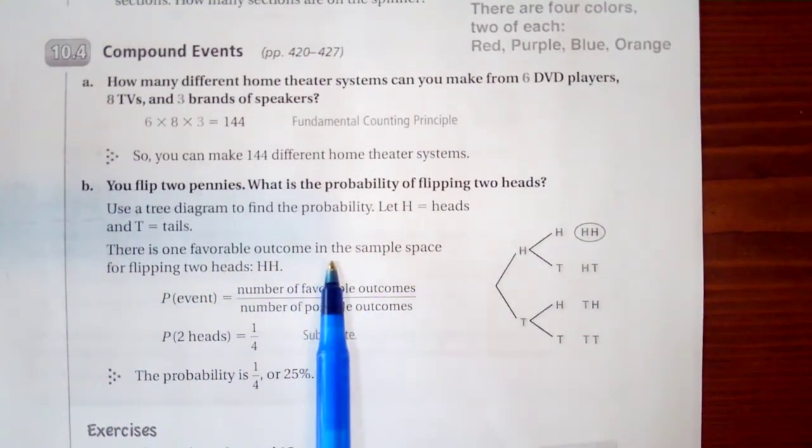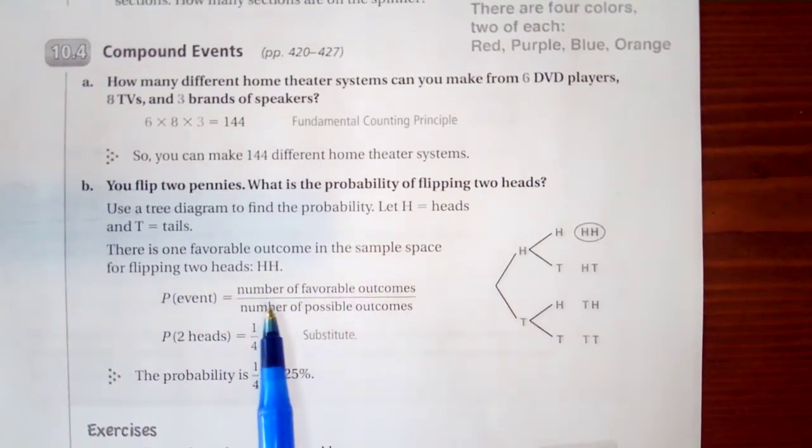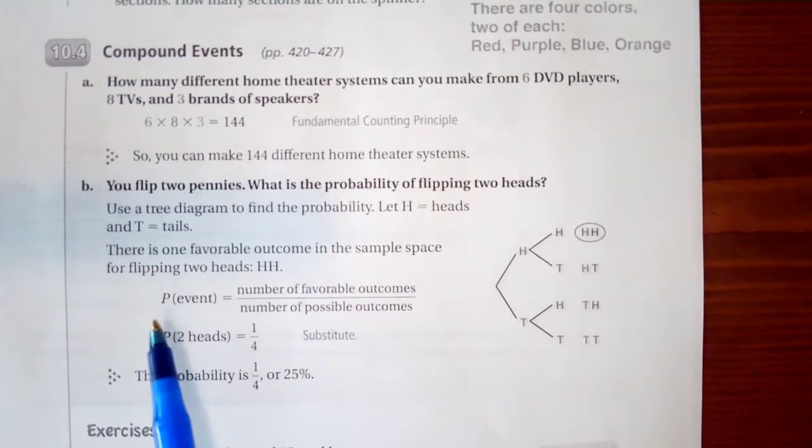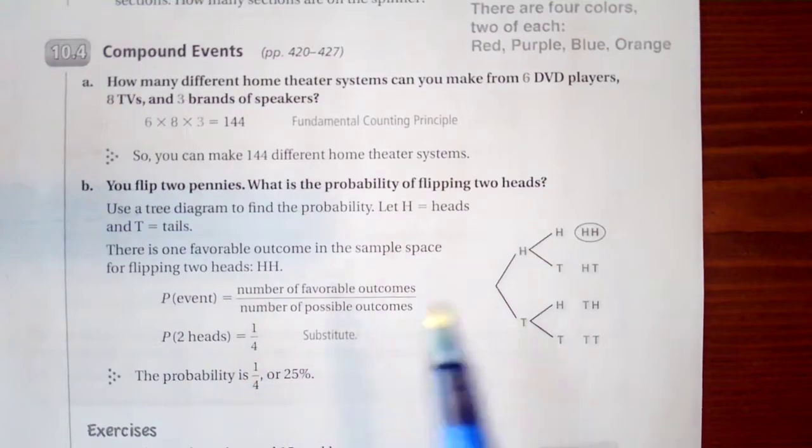There is 1 favorable outcome in the sample space for flipping 2 heads, H H. The event, our probability of this event, number of favorable outcomes over number of possible outcomes. The probability of 2 heads, so 1, we have 1, and then 4 possible outcomes. So the probability is 1 fourth or 25%.